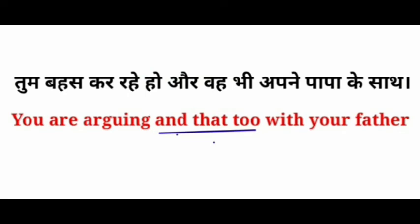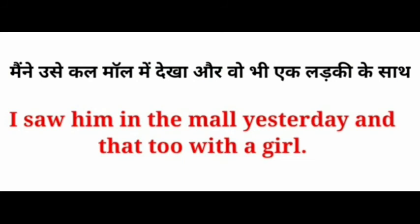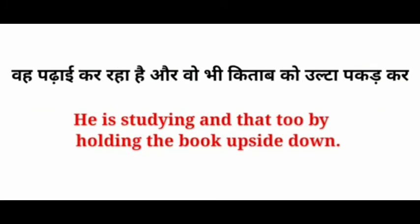Next example: तुम भैस कर रहे हो और वो भी अपने पापा के साथ. Next example: मैंने उसे कल मॉल में देखा और वो भी एक लड़की के साथ — I saw him at the mall yesterday, and that too with a girl. Next: वैं पढ़ाई कर रहा है और वो भी किताब को उल्टा पकड़ कर — He is studying, and that too holding the book upside down.